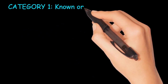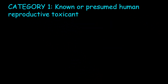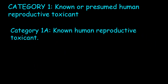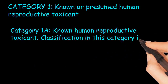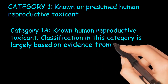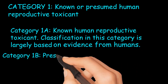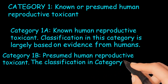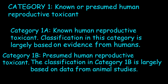Category 1: Known or presumed human reproductive toxicant. Category 1A: Known human reproductive toxicant — classification is largely based on evidence from humans. Category 1B: Presumed human reproductive toxicant — the classification in category 1B is largely based on data from animal studies.